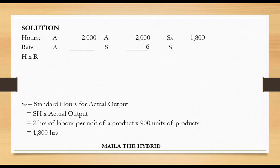From the question, we are also given the standard rate. We are told labor would be paid at $6 per hour, so we put $6 on both standard rate sides and proceed with the pro forma.